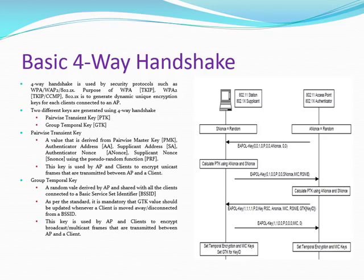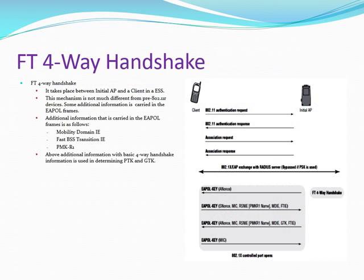The reason I am concentrating on this protocol is to differentiate between normal four-way handshake parameters and the FT four-way handshake parameters. As you can see, parameters used in generating dynamic keys in the FT four-way handshake are: SNonce, ANonce, PMK-R1, FT Information Element, Mobility Domain Information Element, AP address, and client address.